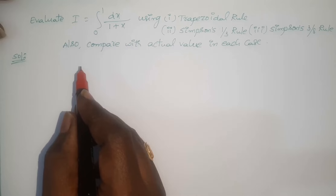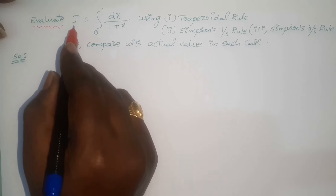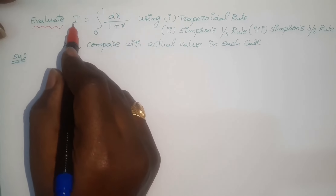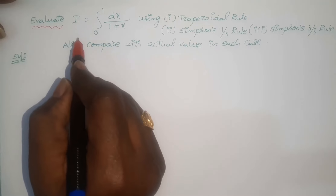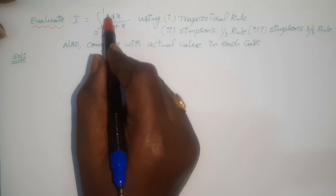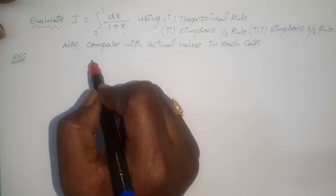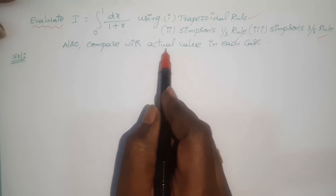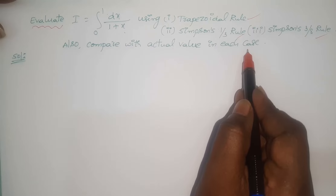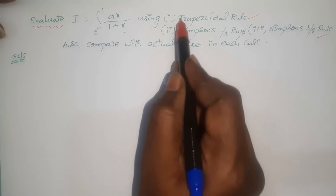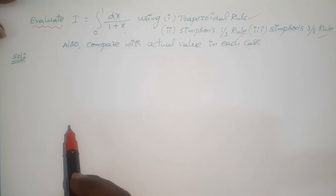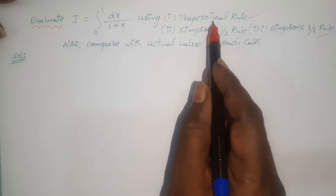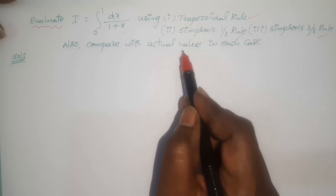Hi everyone, welcome back to our channel. In this video I will give another example on numerical integration. The given problem: evaluate I, where the given integral is 1 by 1 plus x dx within the limits 0 to 1, using the Trapezoidal rule, Simpson's one-third rule, and Simpson's three-eighth rule, and also compare with the actual value in each case.